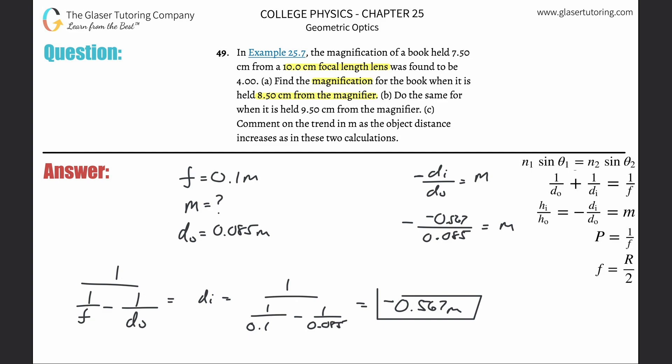We plug and chug now. Let's plug that into the calculator. We get a value of about 6.67. 6.67 and it's positive. That's the magnification.